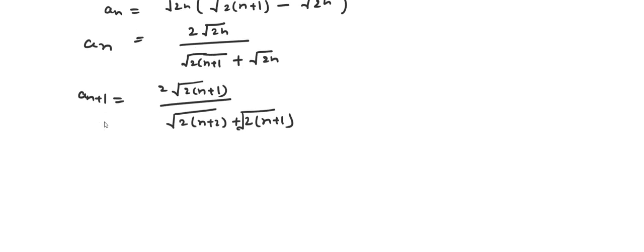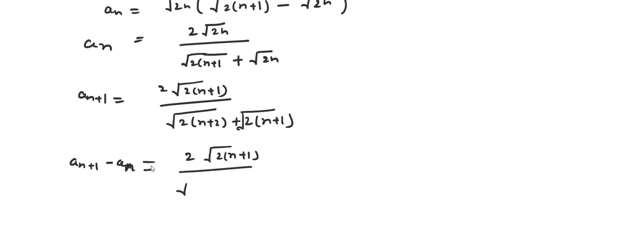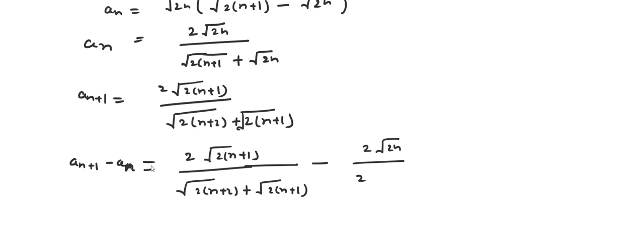To decide increasing or decreasing, we write a_{n+1} minus a_n. If this is greater than or equal to 0, then the sequence is increasing. So a_{n+1} = 2√(2n+1) / (√(2n+2) + √(2n+1)), and a_n = 2√(2n) / (√(2n+1) + √(2n)). We compute the difference of these two terms.